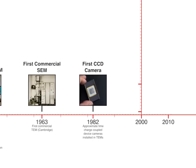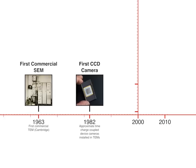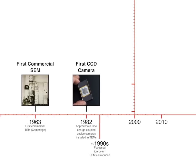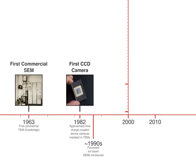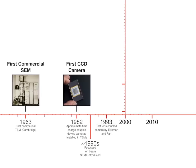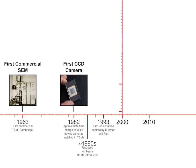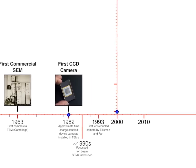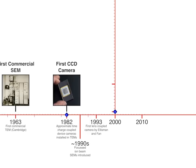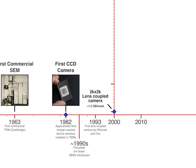In the early 1990s, focused ion beams were introduced. In 1993, lens-coupled cameras were introduced. By the year 2000, technical advances made it possible to collect up to one gigabyte of image data per week.